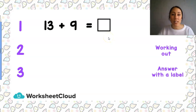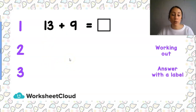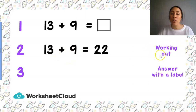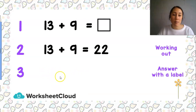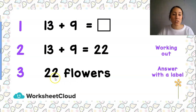Our second step is our working out. Sometimes it is easy and we can do it in our head, but this is not an easy sum. 13 plus 9 — the way we showed our working out — was by drawing a picture, and 13 plus 9 is 22. But our sum still isn't finished, because 22 could be pencils, pages, shoes, or cupcakes — any label. Our label in this sum was flowers. So in our last step, we say we have 22 flowers. And those are our three steps of our story sum.